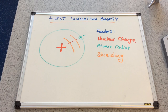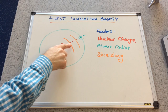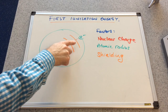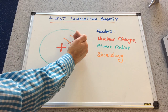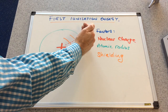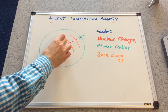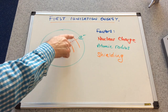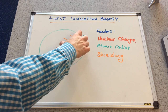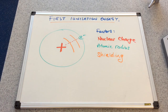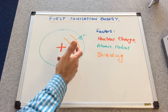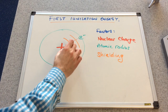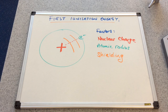The other factor is shielding. Electrons live in these shells. The more shells there are between the outermost electron and the nucleus, these will shield the attraction and actually weaken it. So the more shielding there is, the less the attraction is going to be, and therefore less energy would be needed to get the electron out.